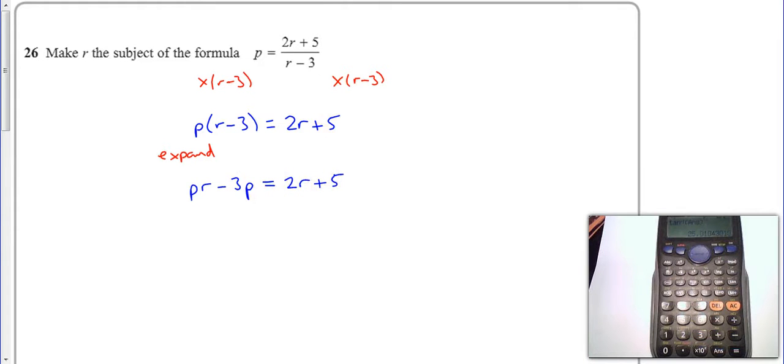Now I want to get all the r's on one side, so I'm going to take away 2r from both sides but at the same time I'm going to add 3p to move this p over there. So that leaves me with pr minus 2r and then I'm going to have 3p plus 5 on that side. If you're not sure what I've done, I've done two steps in one. So I've taken away 2r from both sides but I've also added 3p to both sides.